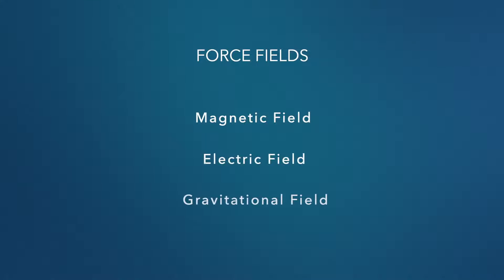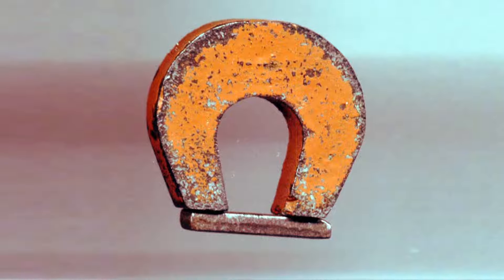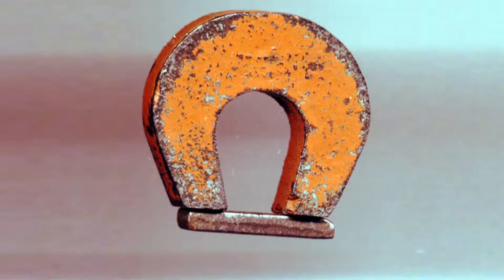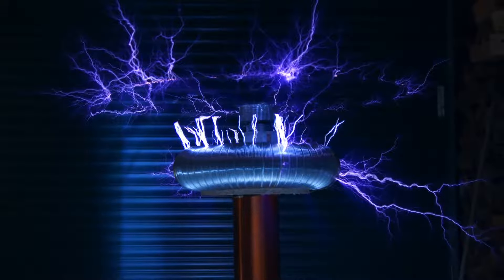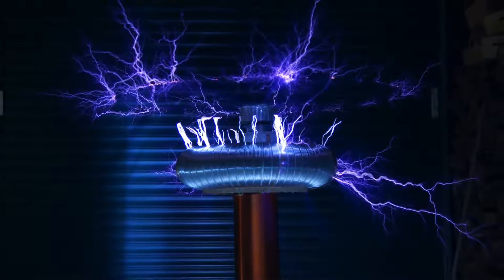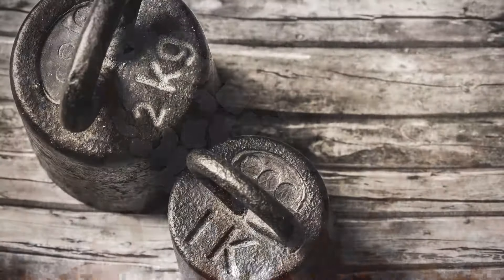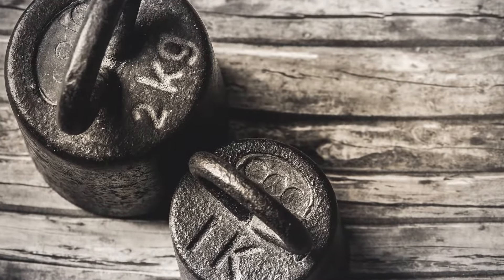In physics, these are known as force fields. They are invisible fields of influence that exert forces on their corresponding substances. The magnetic field, for example, exerts force on a magnetic substance like iron, and thereby attracts it. The electric field exerts force on something that is or can be electrically charged, like an electron or a proton. And the gravitational field exerts force on matter according to its mass.